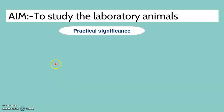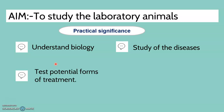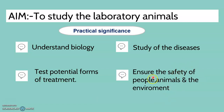What are the practical significances of this experiment? Number 1: understand the biology of animals — their lifespan, body weight, temperature, and so on. Number 2: study of the disease — what type of disease occurs before and after administration of the drug. Number 3: test the potential of the treatment — what is the drug potential. Number 4: ensure the safety of people and animals. These are the four important practical significances.